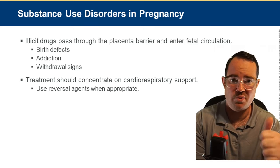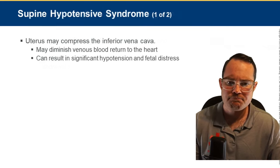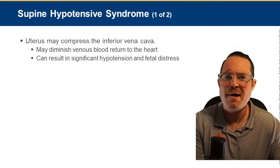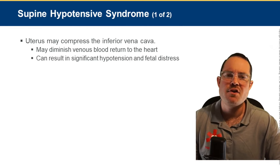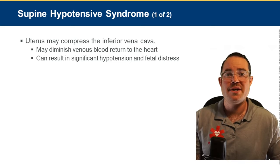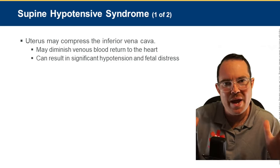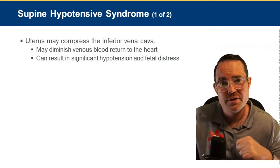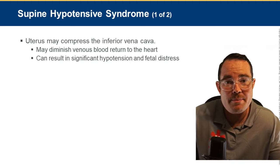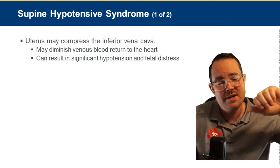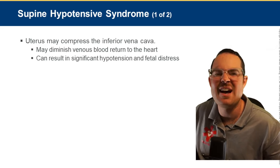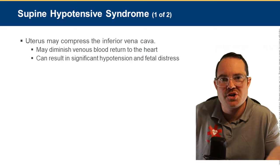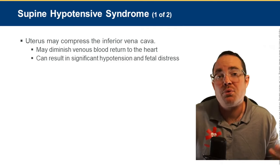Place the OB patient on their left side — left lateral recumbent — to treat supine hypotensive syndrome. After 20 weeks gestation, the uterus has enough weight to compress the inferior vena cava when the patient lies flat, decreasing preload and dropping blood pressure. Placing her on the left side or manually displacing the abdomen to the left relieves the pressure on the inferior vena cava and improves cardiac output.